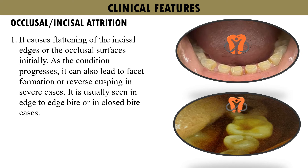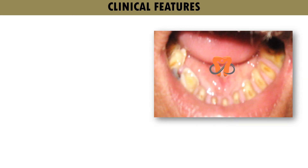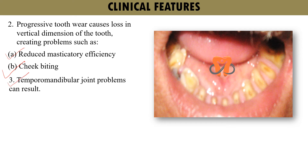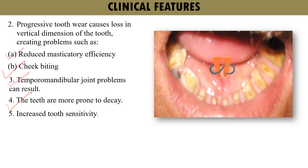For occlusal and incisal attrition, this causes flattening of the incisal edges or occlusal surfaces initially, as seen in the photograph. As the condition progresses, it can also lead to facet formation or reverse cusping. This type of attrition is usually seen in edge-to-edge bite or closed bite cases. Progressive tooth loss can cause the teeth to wear down to the level of the alveolar bone, reducing vertical dimension and creating problems such as reduced masticatory efficiency and cheek biting. Temporomandibular joint problems can also result. Since dentine becomes exposed, teeth are more prone to decay and increased sensitivity.